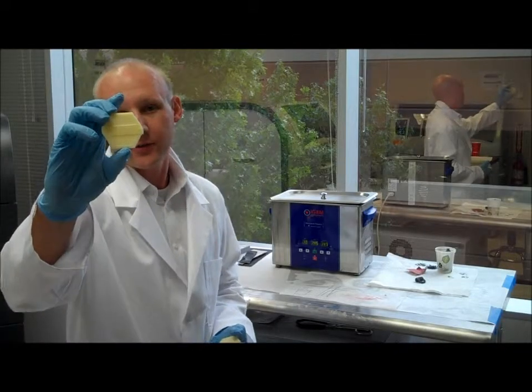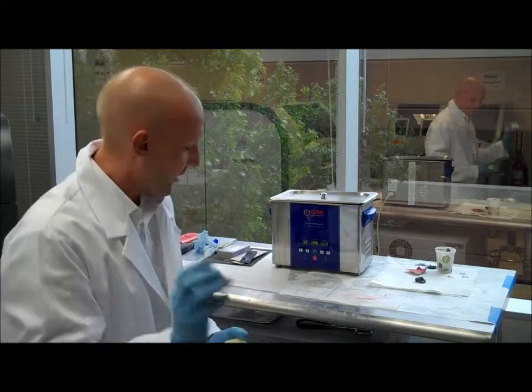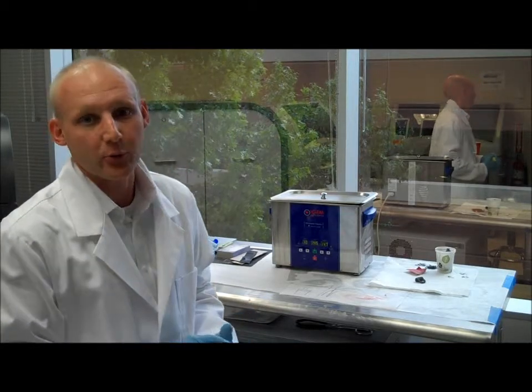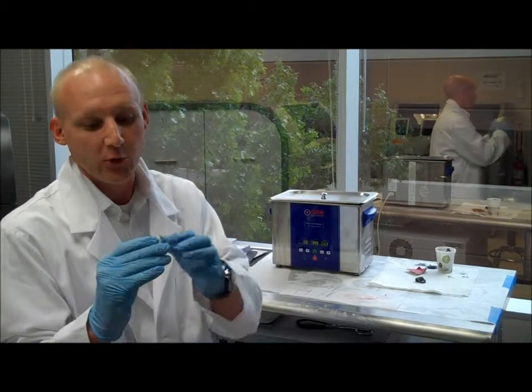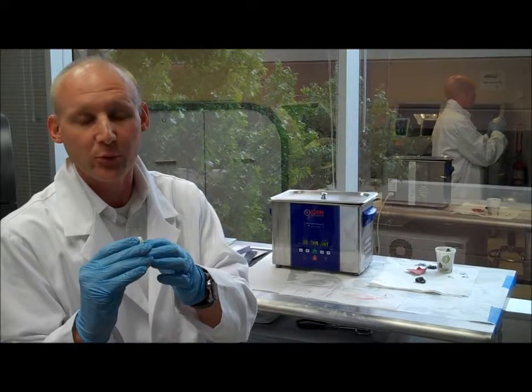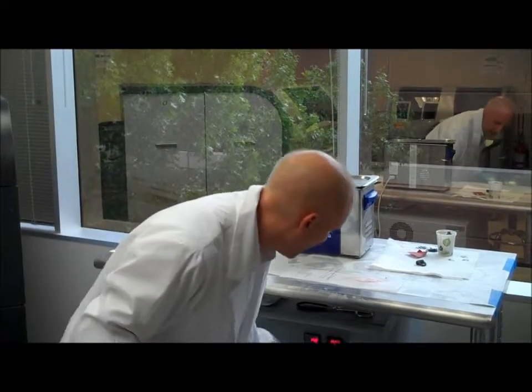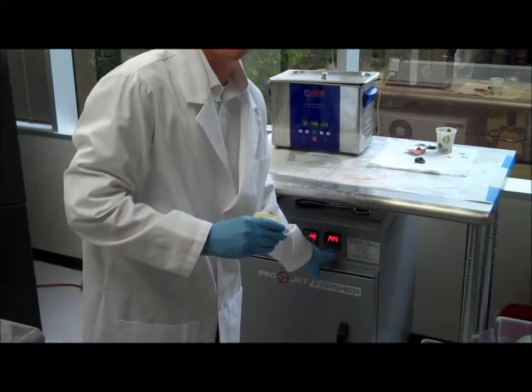Alright, now that we've got our nice little medallions here, we want to go for the next part of the post-processing. We're going to place these with the wax support material into an oven at about 144 degrees Fahrenheit.